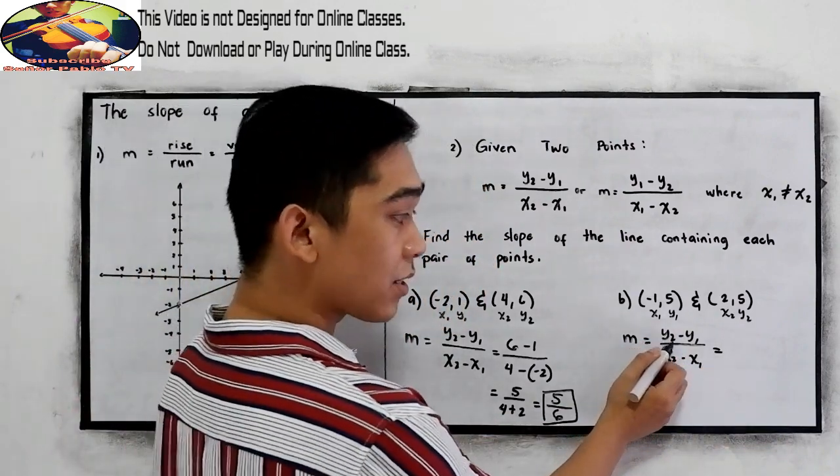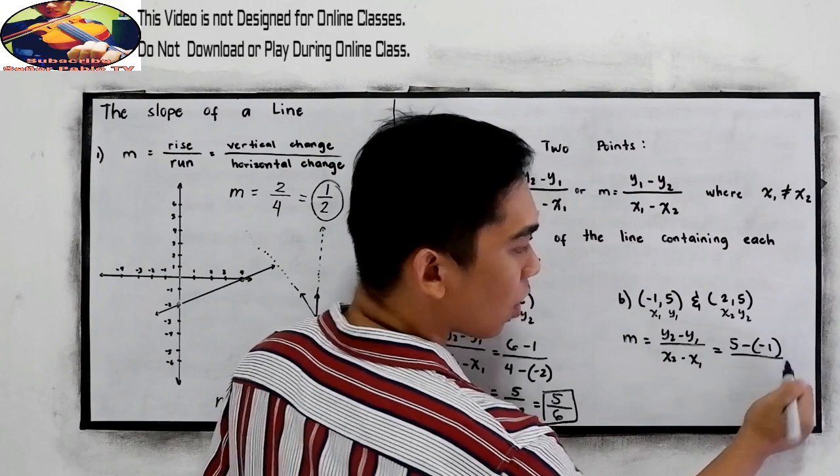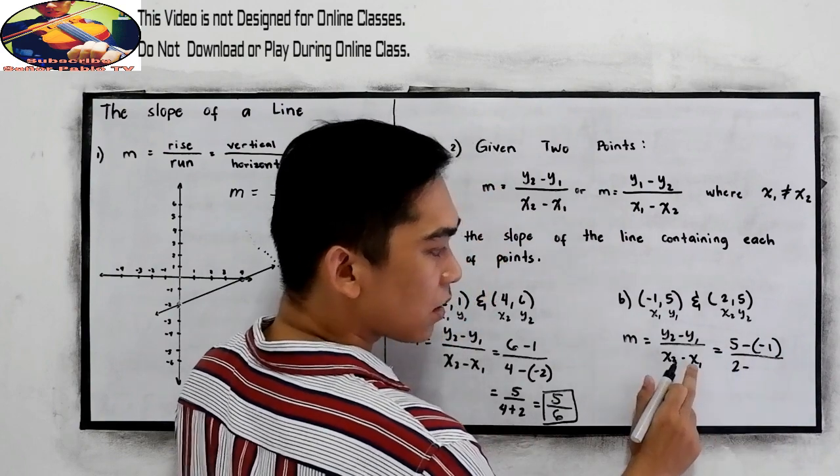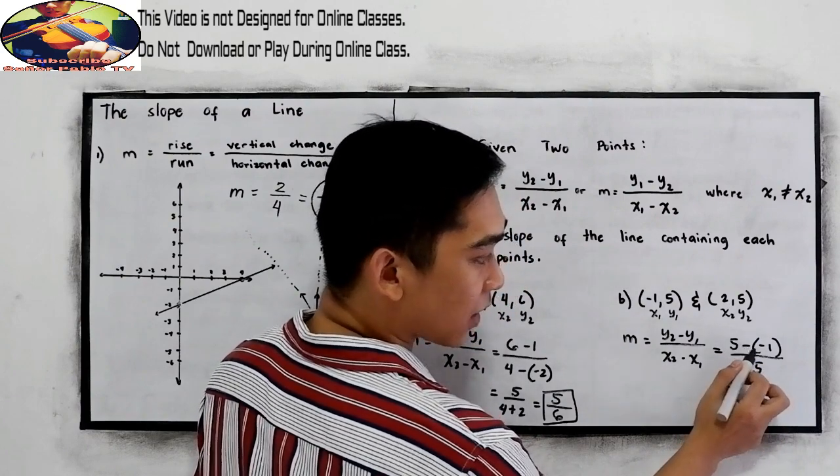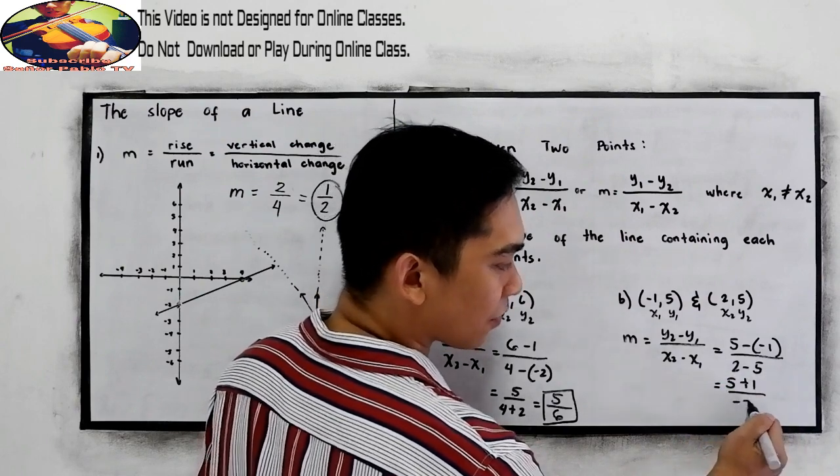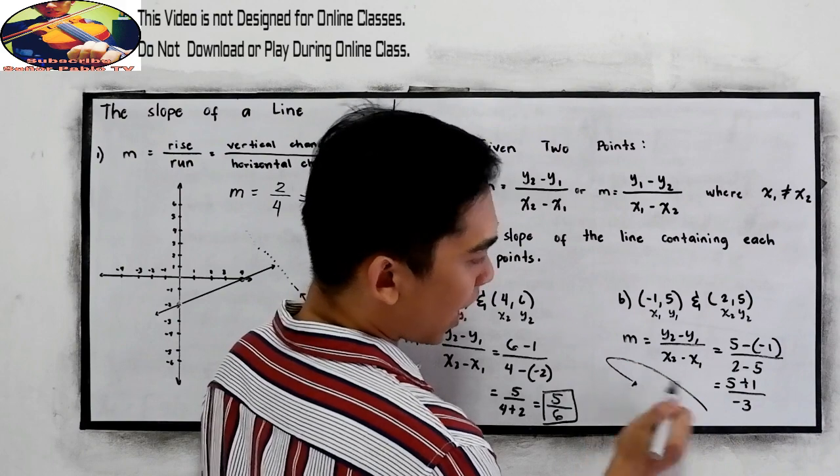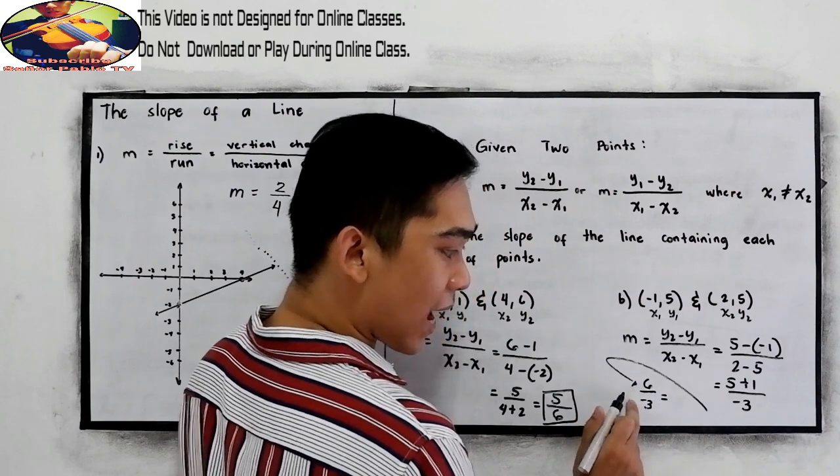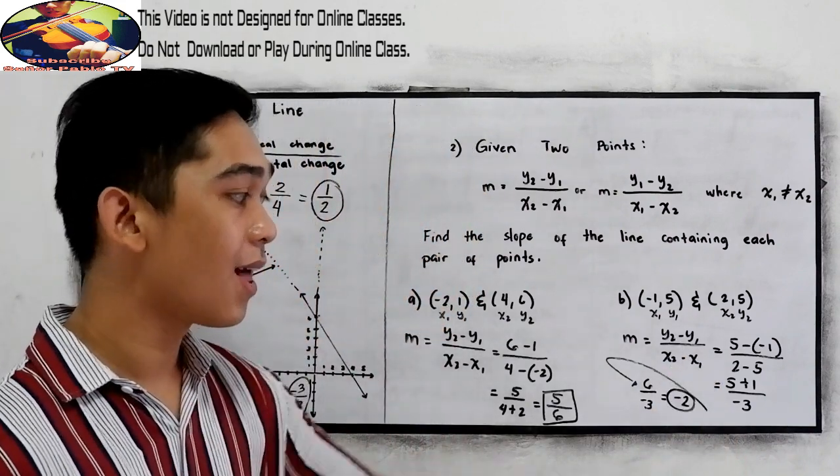Substitute. y sub 2 is 5 minus y sub 1 negative 1 all over x sub 2 is 2 minus x sub 1 5. So we now have 5 negative times negative, that is positive 1 all over 2 minus 5, that is negative 3. We have 5 plus 1, that is 6 all over negative 3. 6 divided by negative 3, that is negative 2. So our slope is negative 2.